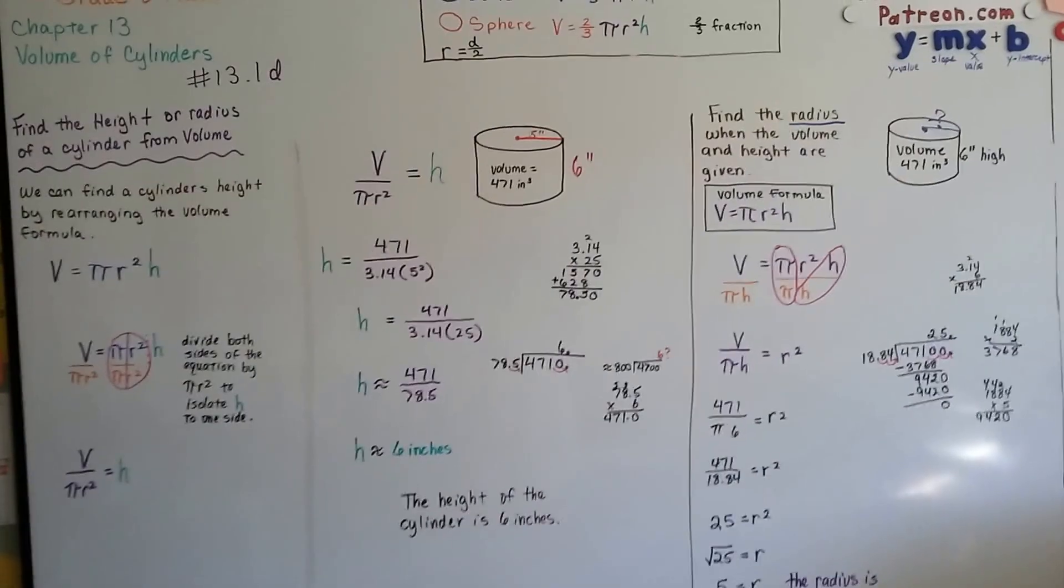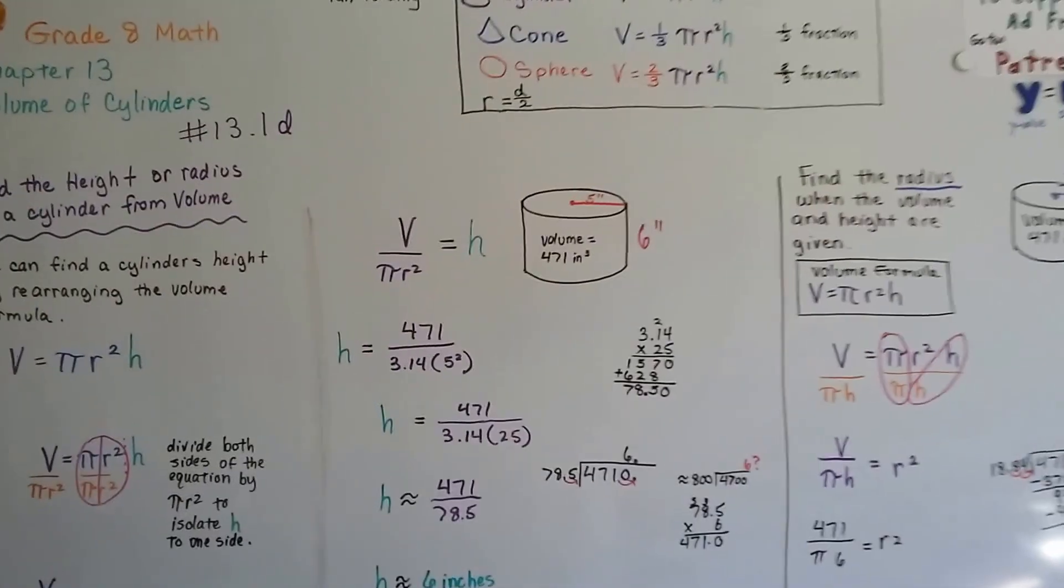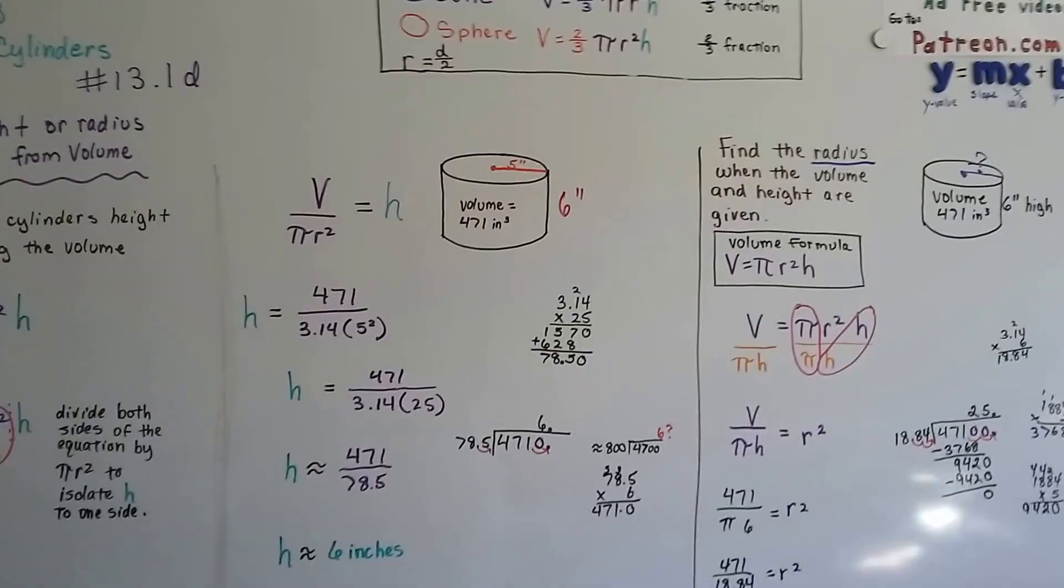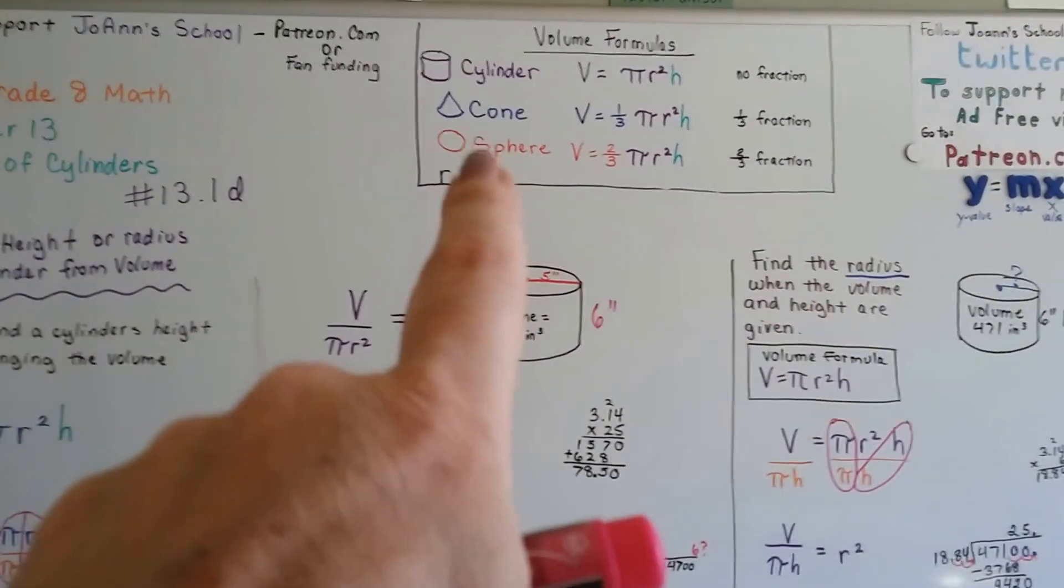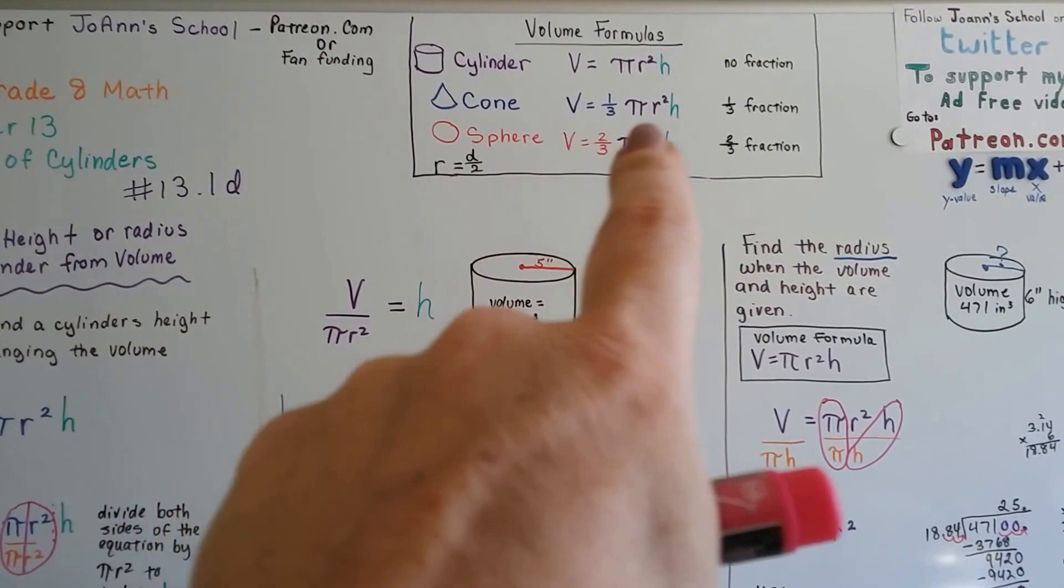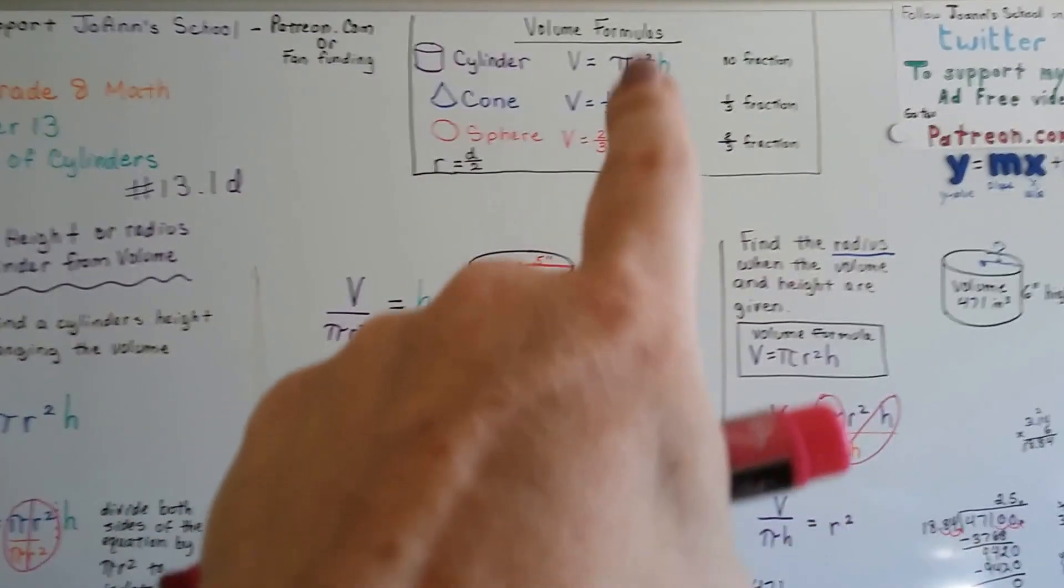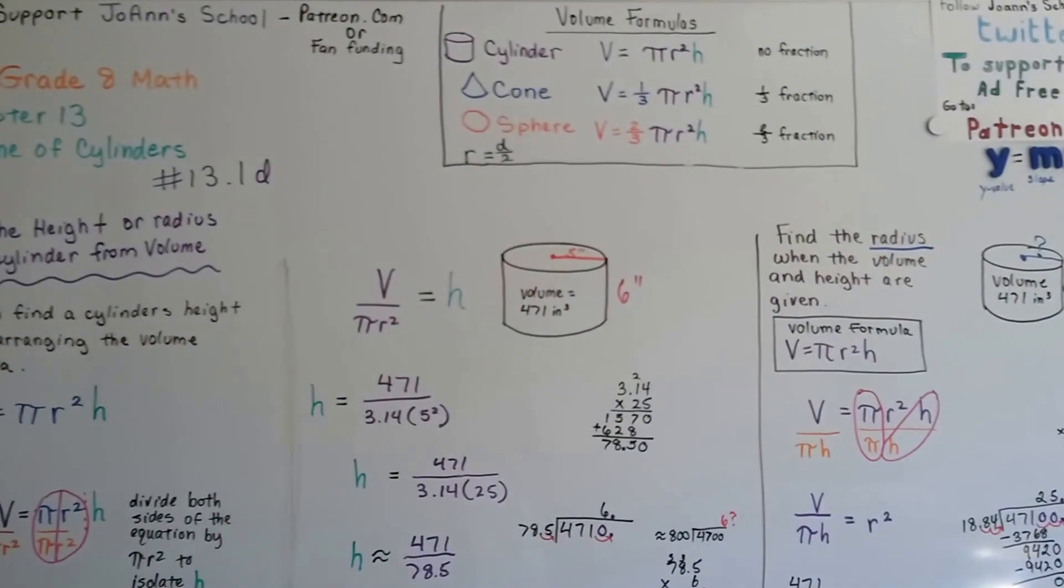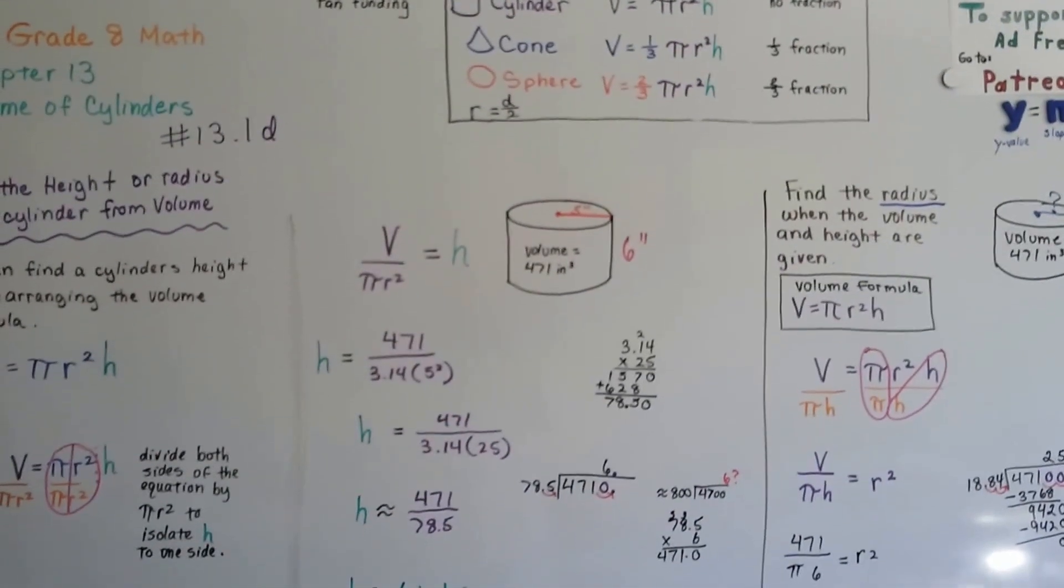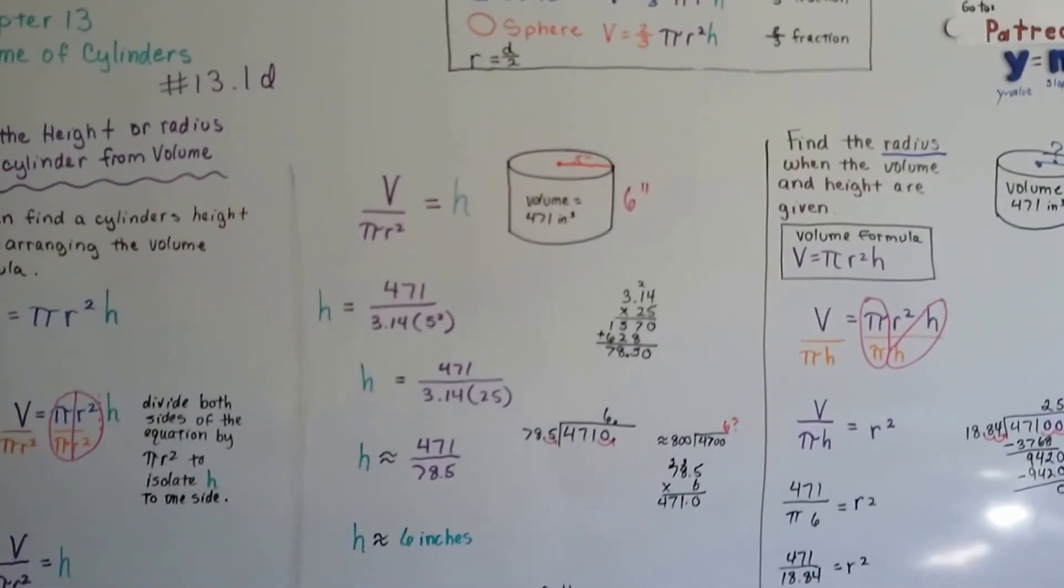That's it. We're going to continue on, and our next video is going to be about the volume of a cone. So we're going to be doing this cone formula right here. And remember, it's just like the cylinder one except it's got a one-third in front of it. I'll see you there. That'll be 13.2a. Bye.